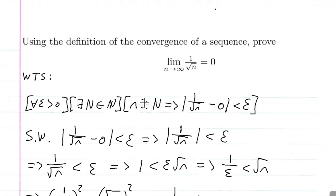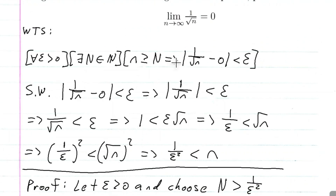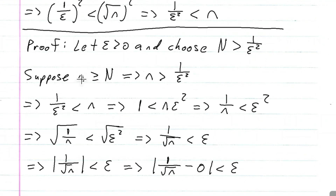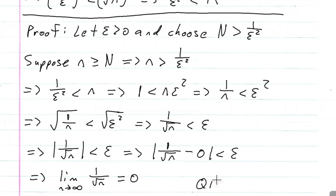We wanted to show that little n bigger than or equal to big N implies that one over the square root of n minus zero is less than epsilon, and that's what we got. We went from n bigger than or equal to big N to the absolute value of one over the square root of n minus zero is less than epsilon. So this implies that the limit as n approaches infinity of one over the square root of n is in fact equal to zero, and that is the proof.